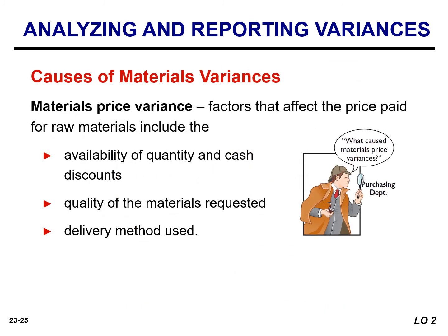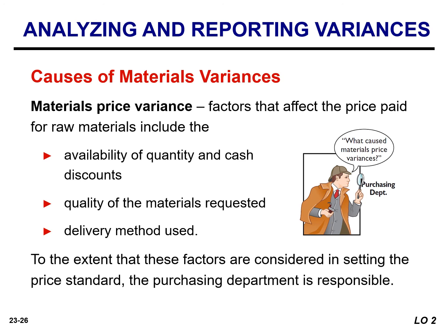The cause of a variance may relate to both internal and external factors. The investigation of a material price variance usually begins in the purchasing department. Many factors affect the price paid for raw materials, including the availability of quantity and cash discounts, the quality of the materials requested, and the delivery method used. To the extent these factors are considered in setting the price standard, the purchasing department is responsible for any variance.